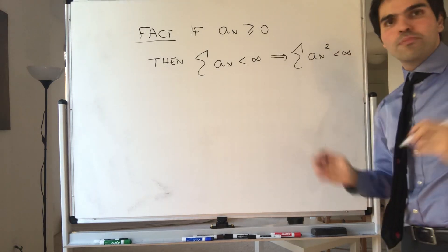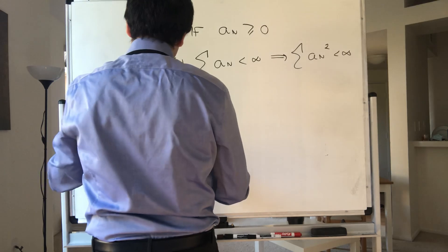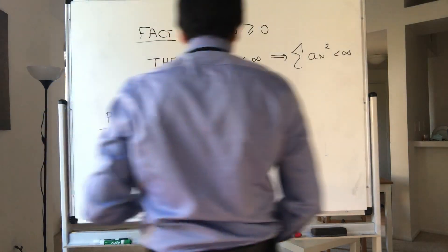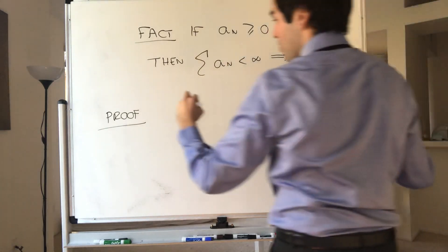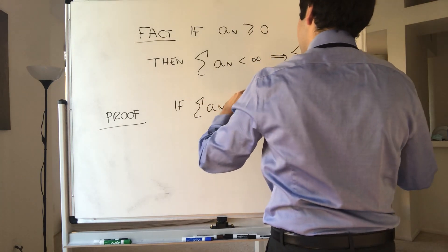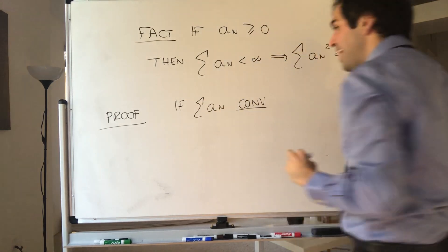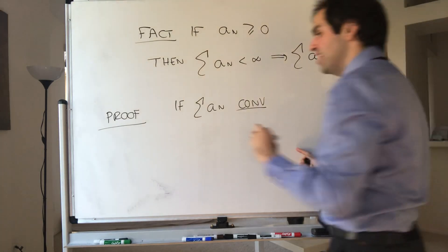And the proof is super quick. So proof: if the series converges, then by the divergence test, we actually know that aₙ has to go to zero.